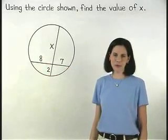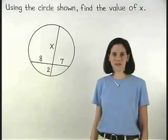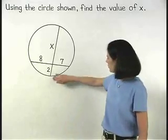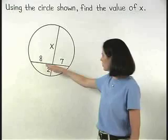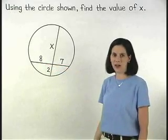And remember that if two chords intersect inside a circle, then the product of the lengths of the segments of one chord is equal to the product of the lengths of the segments of the other chord.